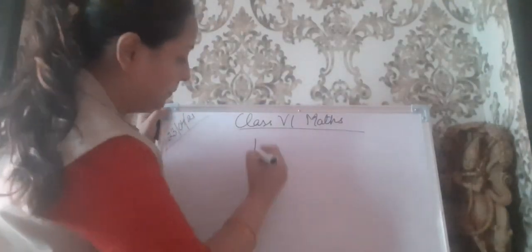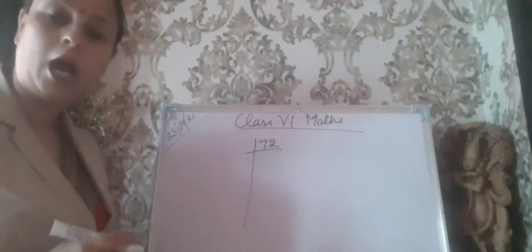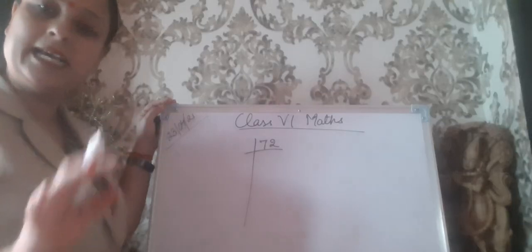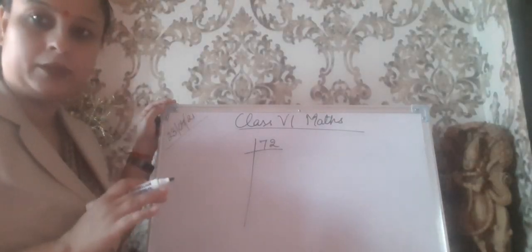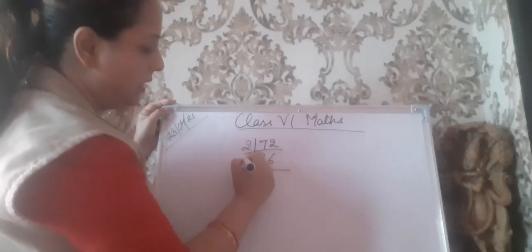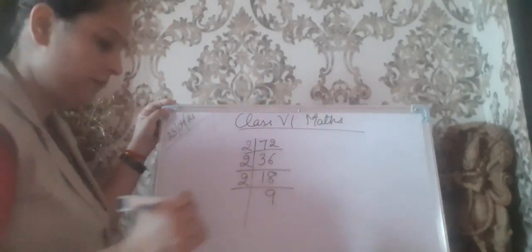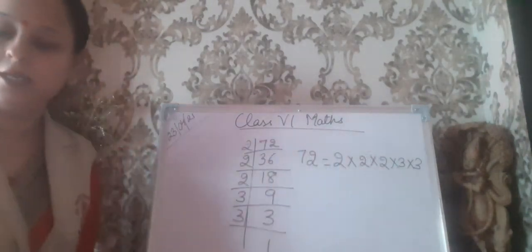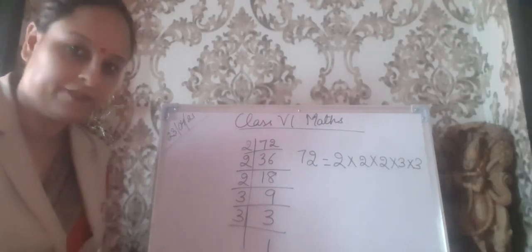Let's do the prime factorization of 72. First I see it is an even number, so I divide it by 2 and get 36. Again divide by 2 and get 18. Again 2 — I get 9. Now I divide by 3, then 3 again, and get 1. So 72 will be written as 2 × 2 × 2 × 3 × 3. This way I have done the prime factorization of 72.